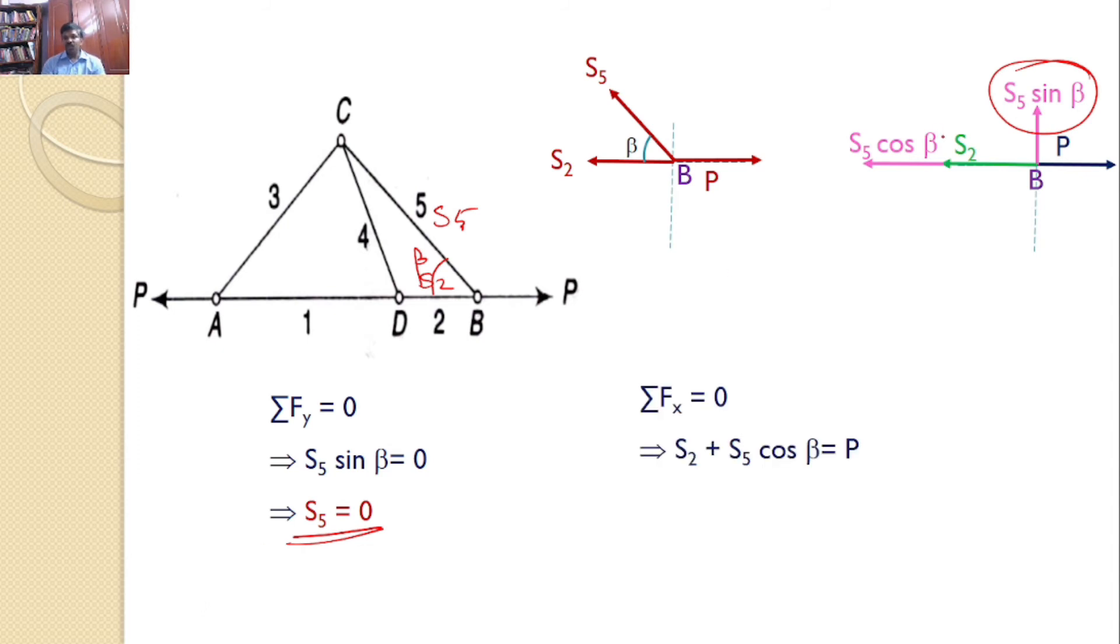And sigma Fx equals 0. So S2 plus S5 cos theta must equal P. And we know that S5 equals 0, so you can say S2 equals P.